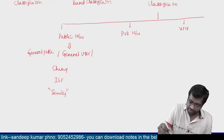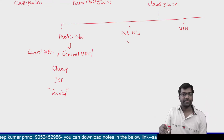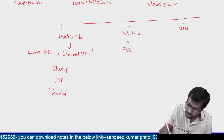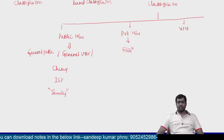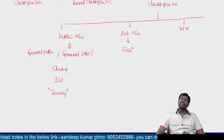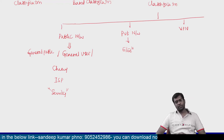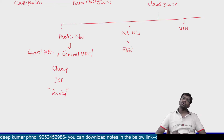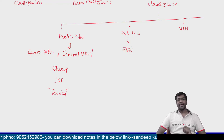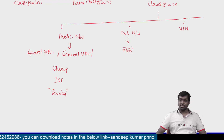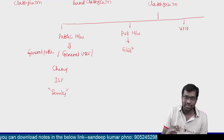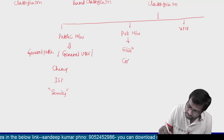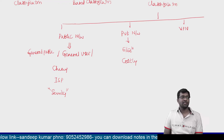Now let us go to the second one: private networks. Who will use private networks? These private networks are only used by employees of an organization. If you take any organization network, that network can be termed a private network. Comparing cost, private networks are always more costly than public networks.